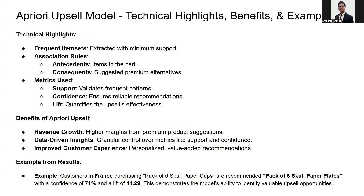Technically, the model extracts frequent item sets and generates rules linking products in a customer's cart to a premium alternative. Metrics like support validate the patterns, confidence ensures reliability, and lift measures the upsell's impact. Compared to models like FP Growth and Eclat, Apriori stands out for its transparency and interpretability. This approach drives revenue growth by recommending high-margin products and improves the customer experience through tailored recommendations.